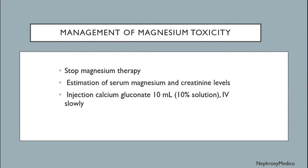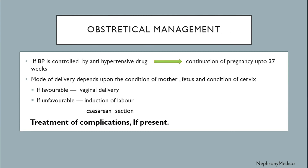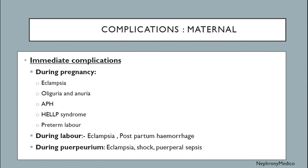Obstetric management: if blood pressure is controlled by antihypertensive drugs, continuation of pregnancy up to 37 weeks. Mode of delivery depends upon the condition of the mother, fetus, and condition of the cervix — if favorable, vaginal delivery; if unfavorable, induction of labor or cesarean section. Treatment of complications should be done if they are present.